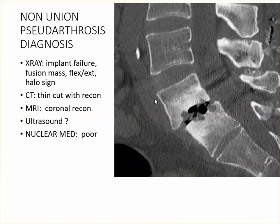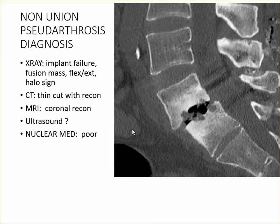How do you make a diagnosis of nonunion? X-rays are really not so helpful. Usually it's a thin-cut CT scan. On this CT scan you can see there's no bridging bone — it's all immature. A thin-cut CT scan is really the best way to diagnose it. MRI I haven't found to be very helpful. Ultrasound and nuclear medicine are not that helpful either.